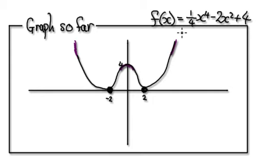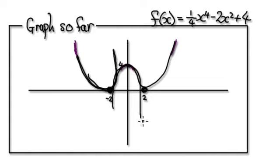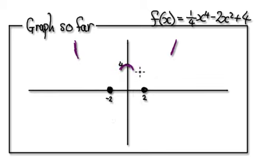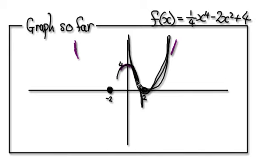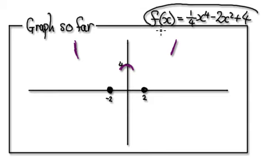The next thing we need to do is look at the point of inflection. If you think about it, this is concaving up, and then this bit here is concaving down, so there's a point of inflection somewhere in here. And then this bit here is concaving down, and this bit later on is concaving up. So there's a point of inflection somewhere. To consider the point of inflection, we need to look at the second derivative, and I will talk about it in the next video.